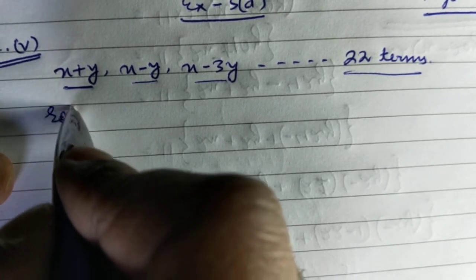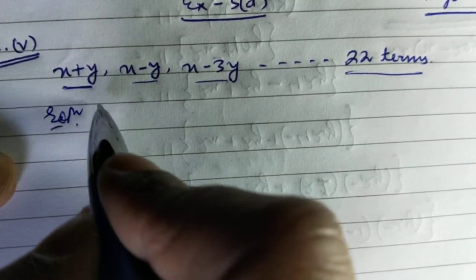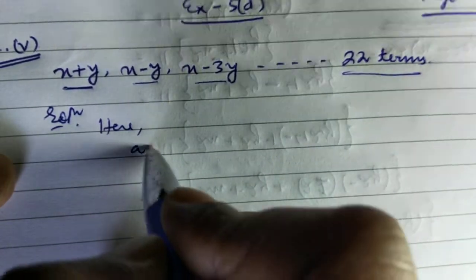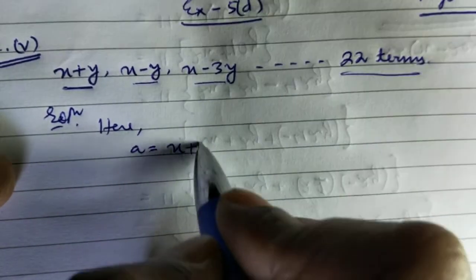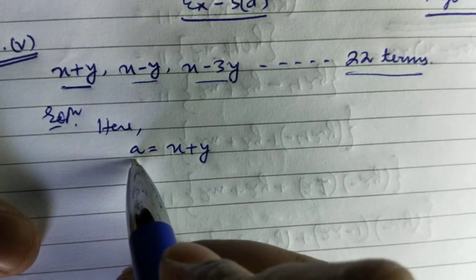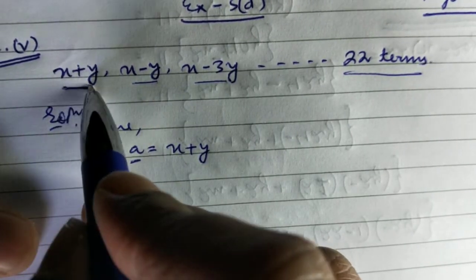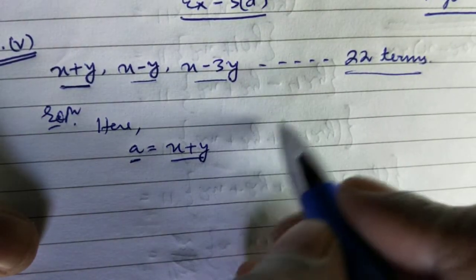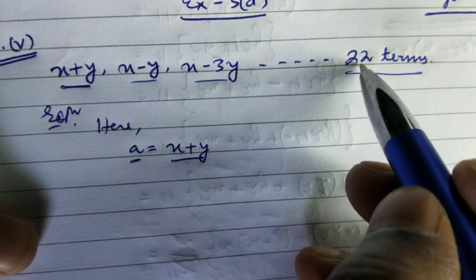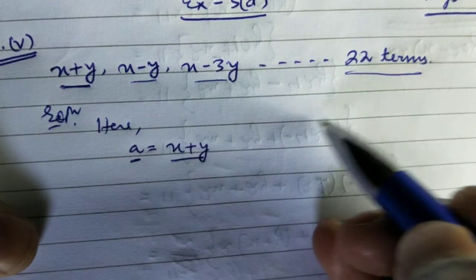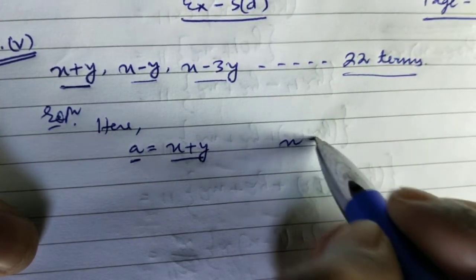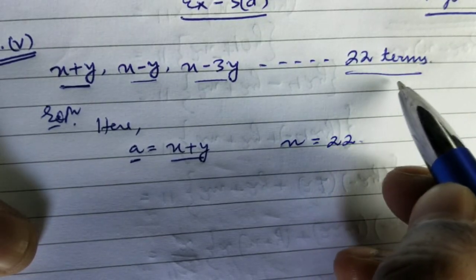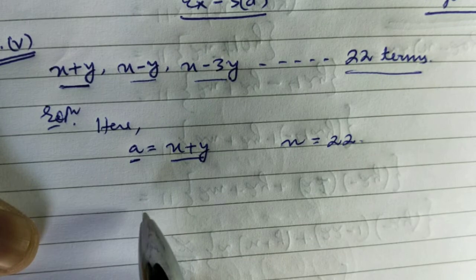In this question it is mentioned that the first term is x plus y. We already know that 'a' indicates the first term, so a is equal to x plus y. The total number of terms is 22, since that is mentioned in the question, so n is equal to 22.